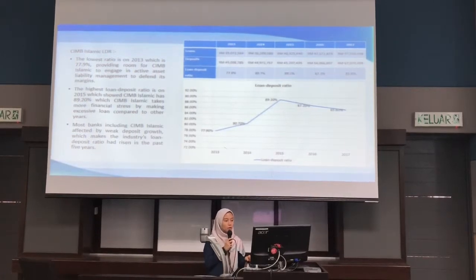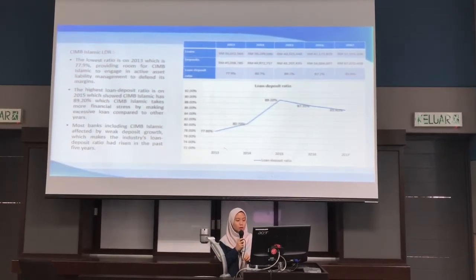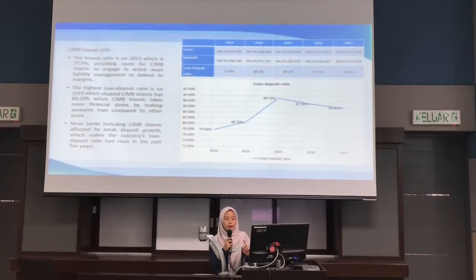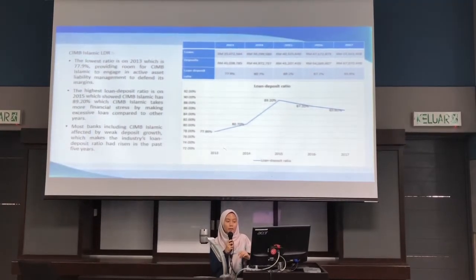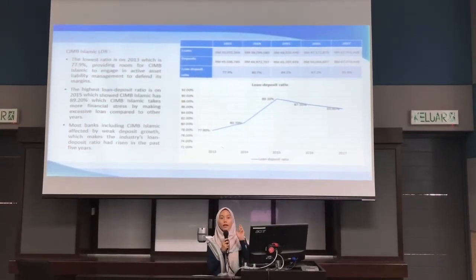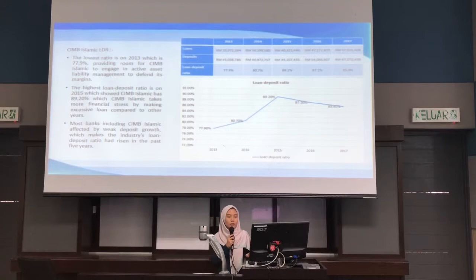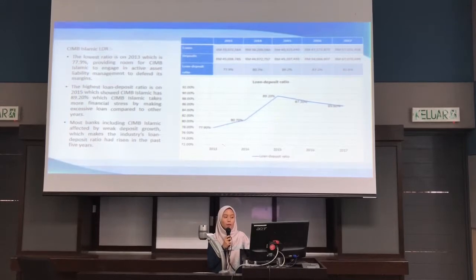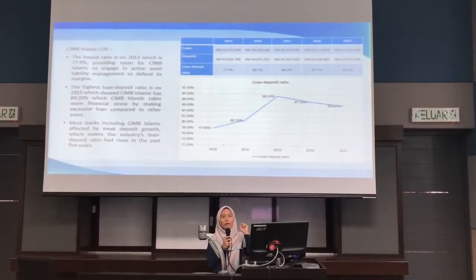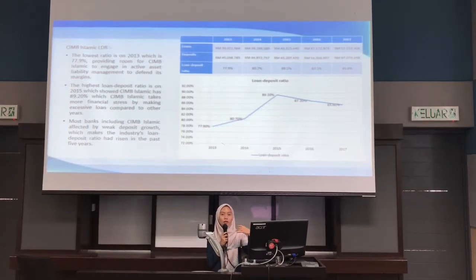Most banks, including CIMB Islamic, were affected by weak deposit growth, which caused the industry's loan deposit ratio to rise over the past 5 years. In 2015, CIMB Islamic was particularly affected by weak deposit growth, which is why its percentage was highest. The ratio then declined to 87.2% in 2016 and 85.8% in 2017. It is acceptable for CIMB Islamic to have these percentages since they remain below 90%, meaning the bank still has enough liquidity to maintain operations.